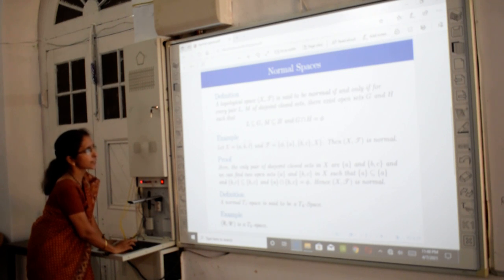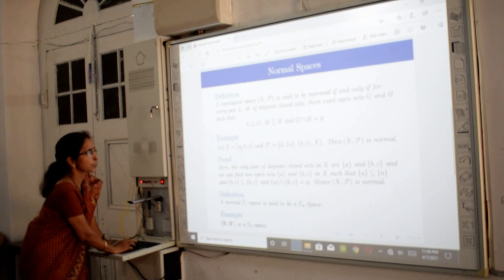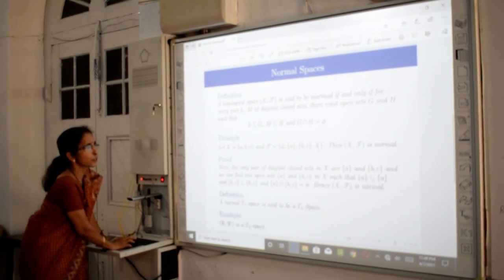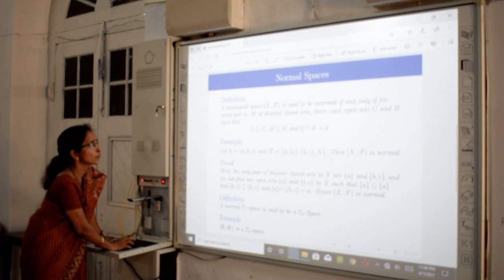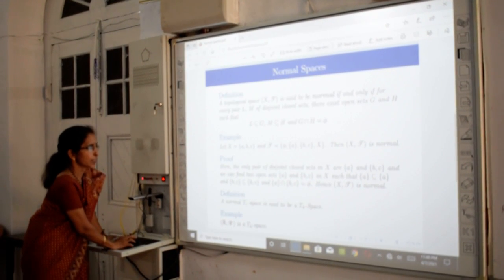Now, we will discuss this example. S is equal to {A, B, C, D} with topology consisting of phi, S, {A}, {B, C}, and {D}. We will check if this is normal.